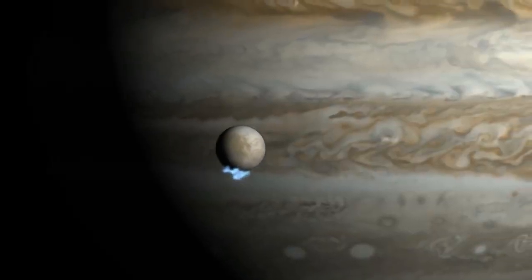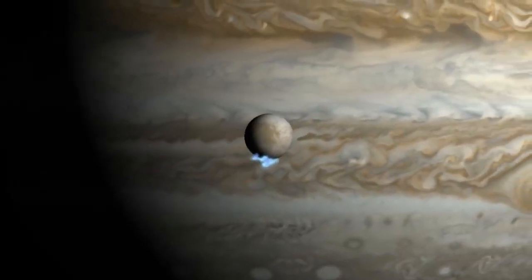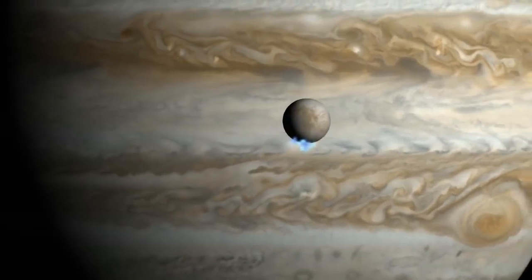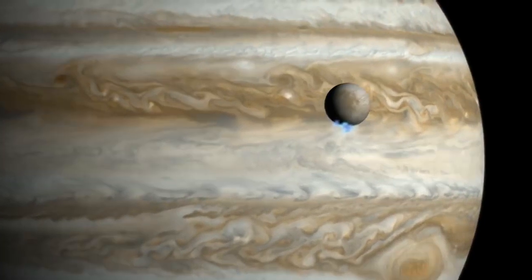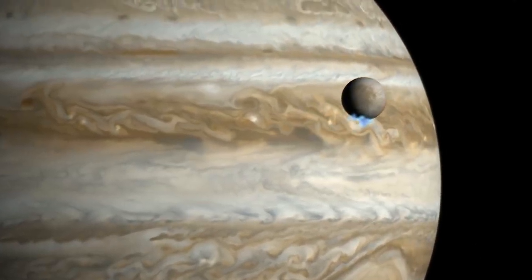In 2013, Hubble provided the first observational evidence of water vapor erupting from the frigid surface of Jupiter's moon Europa, near its south pole.